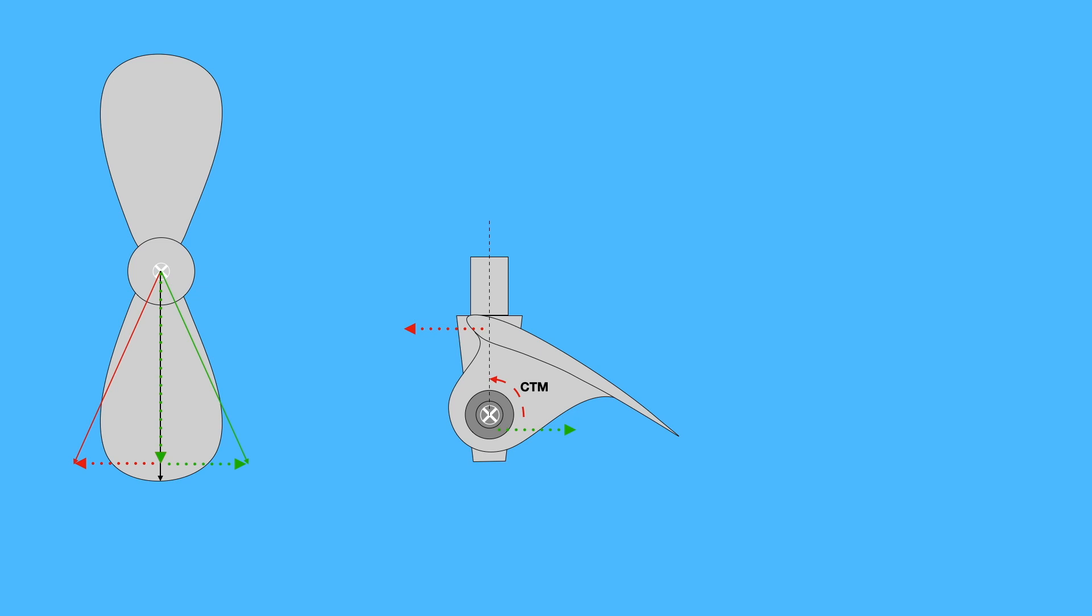It's counteracted by the total reaction of the blade. Total reaction does not work through the axis of the blade and therefore it creates a turning moment which is opposite to that created by CTM. And when this force is equal and opposite to the couple created by CTM, then the blade will be in that sweet spot at an efficient angle of attack.